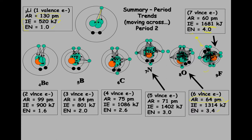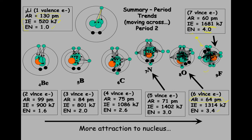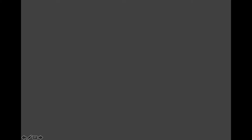Those are your trends for atomic radius, IE, and EN. It's really important you review this and go over this — there's a lot to know and think about. Just think about the attraction, because eventually we're going to take this to the bonding unit and you're going to have to know it pretty well. More attraction to the nucleus as you go across a period. We'll talk to you soon.